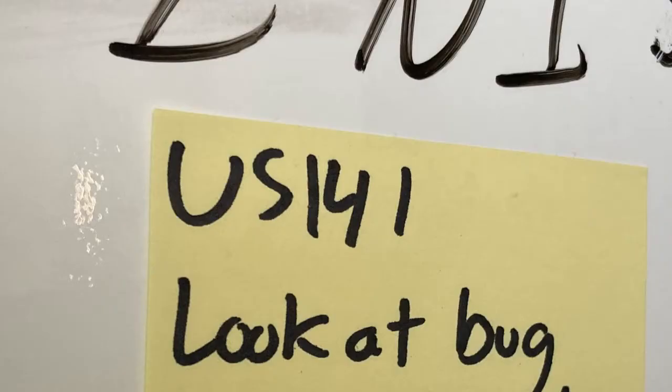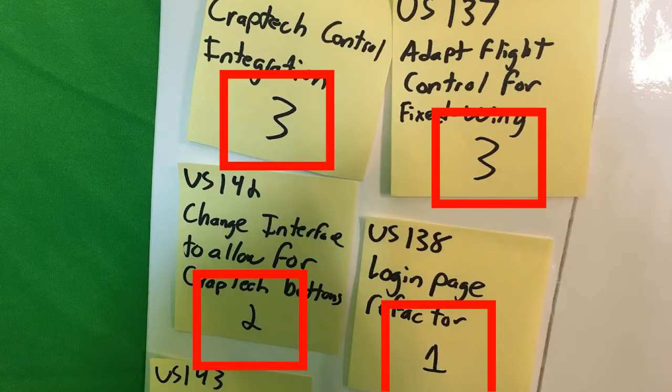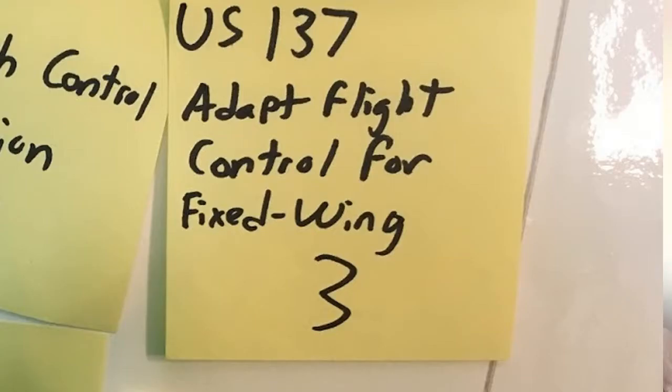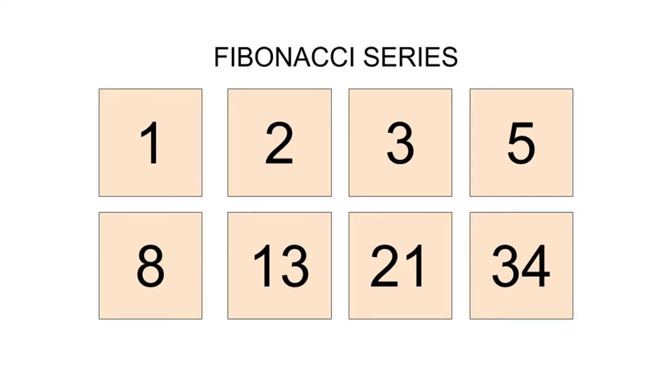Every ticket has a tracking number on it so it can be referenced in communication. It also has a story point number on it. There are a few ways to estimate story point numbers, and that can be a video in itself. But a story point is normally the amount of work a developer can do in one day, or the relative difficulty of a problem. Something easy that can be done in one day might have a story point of one. Something harder may have a story point value of two or three.